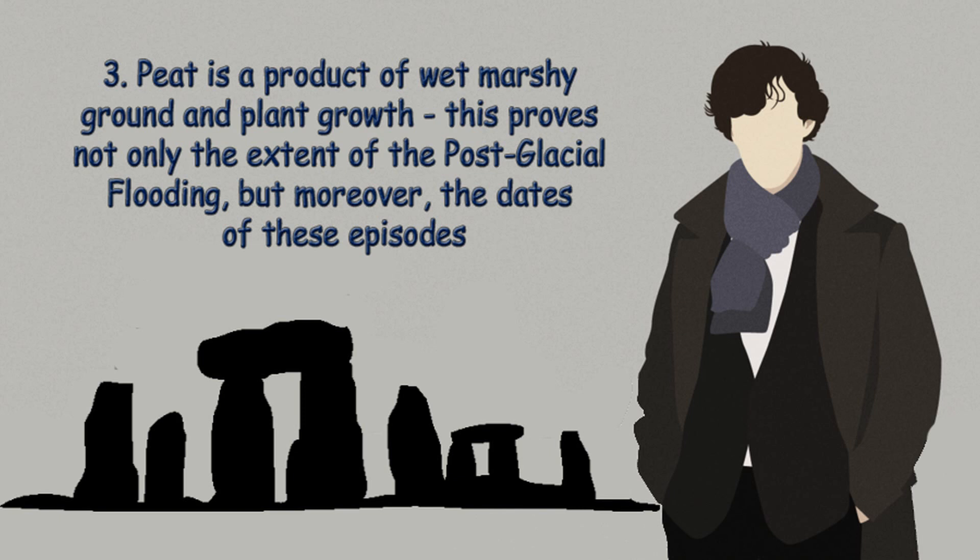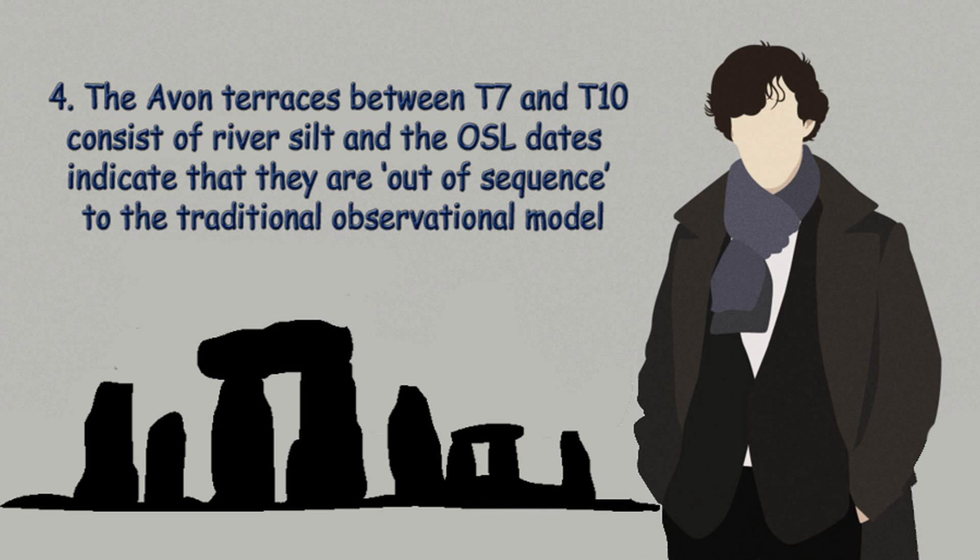4. The Avon Terraces between T7 and T10 consist of river silt, and the OSL dates indicate they are out of sequence to the traditional observational model.